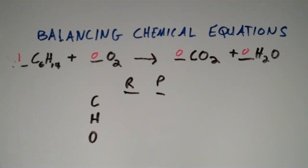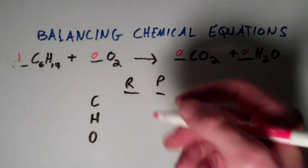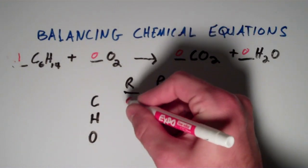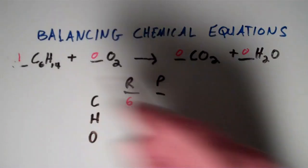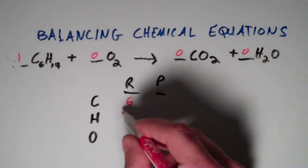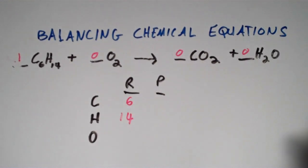So in giving this a coefficient of one, we've now changed the number of hydrogens and the number of carbons on the left-hand side of the equation. So that means I can fill out my little chart here. It looks like we have six carbons because six times one is six, and then we have 14 hydrogens, because 14 times one is 14.